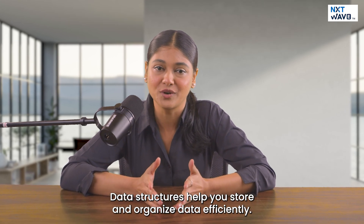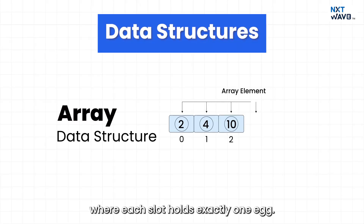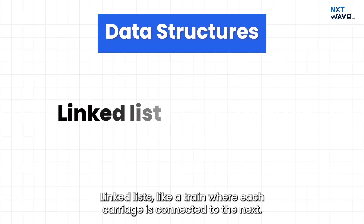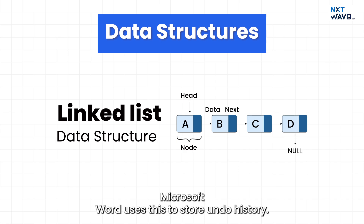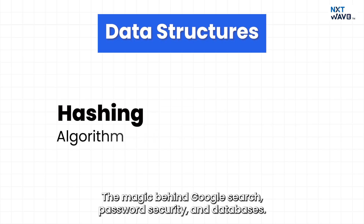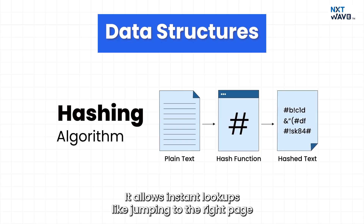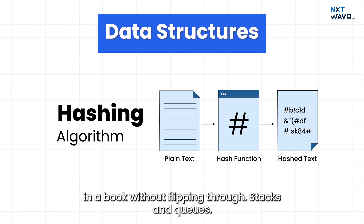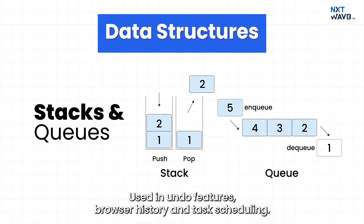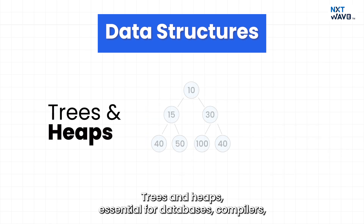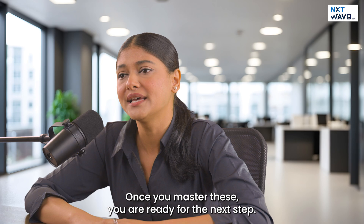Step three: master the core data structures. Data structures help you store and organize data efficiently. This includes arrays — like an egg carton where each slot holds exactly one egg; linked lists — like a train where each carriage is connected to the next (Microsoft Word uses this to store undo history); hashing — the magic behind Google Search, password security, and databases, allowing instant lookups like jumping to the right page in a book; stacks and queues — used in undo features, browser history, and task scheduling; and trees and heaps — essential for databases, compilers, and hierarchical storage like file systems.